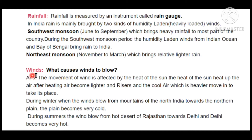Next is wind. Why does wind blow? During the day, the sun's rays heat up the Earth, warming the air. Warm air becomes lighter and rises upward. When warm air rises, the cooler, heavier air rushes in to take its place — and this is how wind blows. We have already discussed this in the chapter on flow of heat, where we talked about land breeze and sea breeze: lighter air goes up and colder air rushes in to take its place.